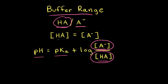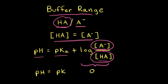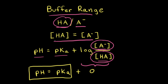Buffer solutions are most effective at resisting a change in pH in either direction when the concentration of the weak acid is equal to the concentration of the conjugate base. When the concentrations are equal to each other, the ratio is equal to 1, and the log of 1 is equal to 0. Therefore, when the concentrations are equal to each other, the pH of the buffer solution is equal to the pKa of the weak acid plus 0, so the pH is equal to the pKa.